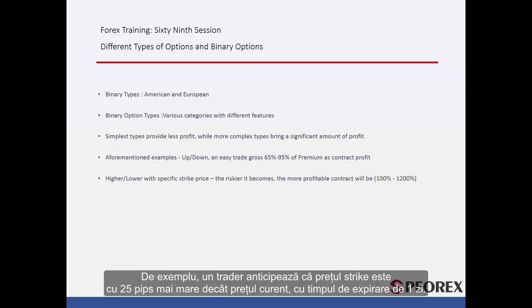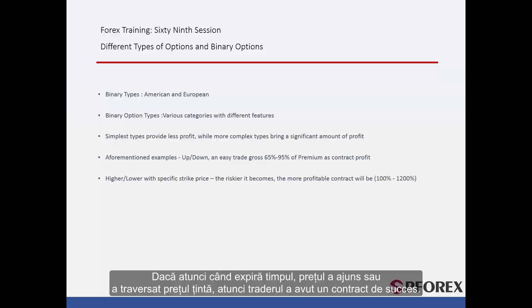For instance, a trader anticipates that the strike price is 25 pips higher than the current price with a one-day expiration time. If at the expiration time the price stands on or crosses the target price, then the trader has succeeded in their contract.